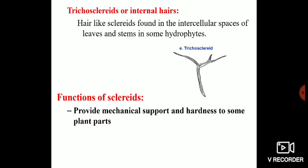And finally we have trichosclereids or internal hairs. These sclereids are hair-like structures which are found in the intercellular spaces of leaves and stems in some hydrophytes. In some hydrophytes you will find these sclereids which are known as trichosclereids.